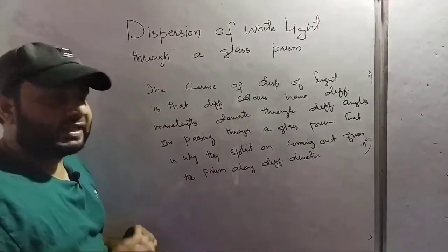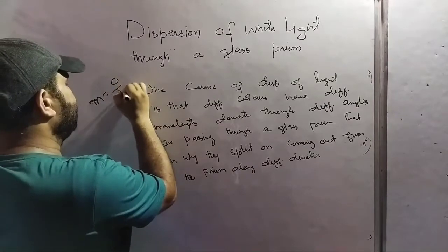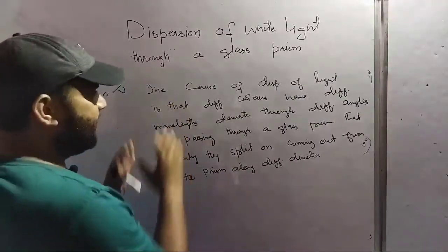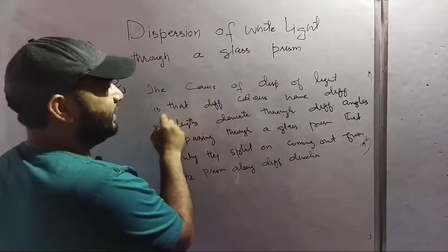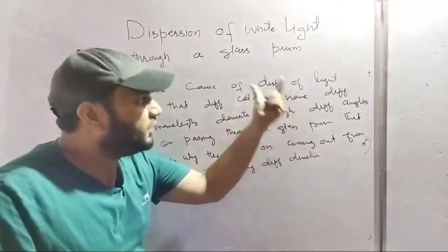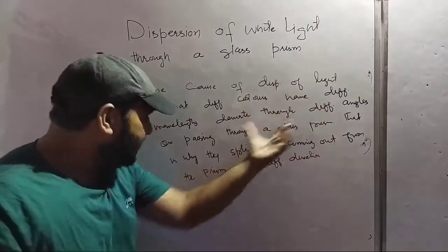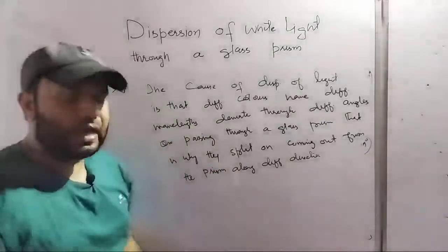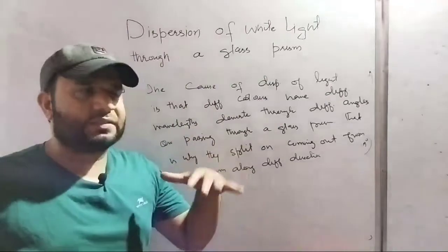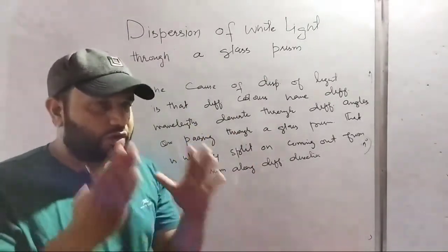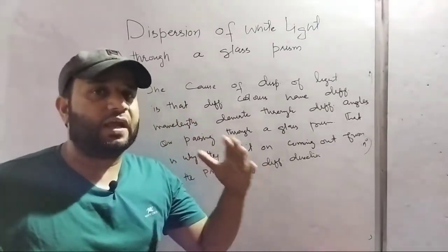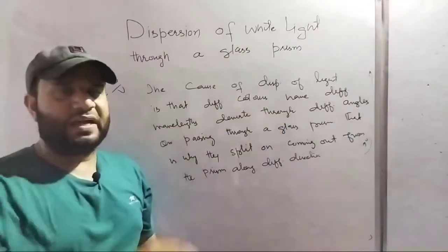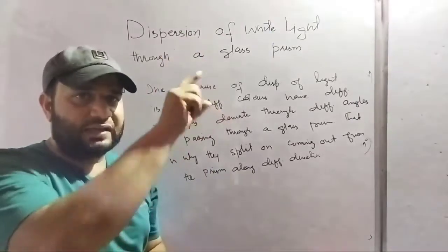One more point: since n = c/v, and each color has a different wavelength, their velocities are different, and so their refractive indices are different. The cause of dispersion of light is that different colors have different wavelengths, and they deviate through different angles on passing through a glass prism. That is why they split on coming out from the prism along different directions — jab light enter hoti hai glass prism mein, different colors ki direction alag alag hoti hai.